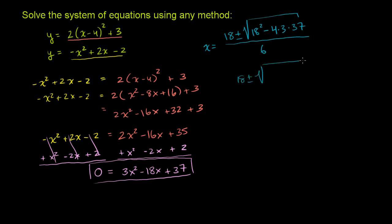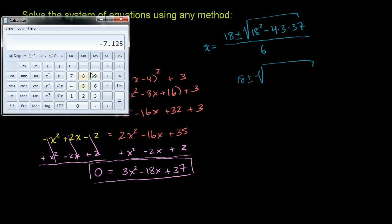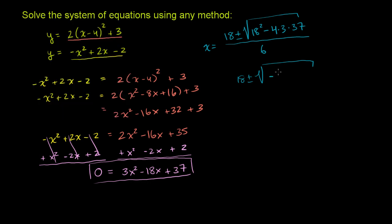Now let's think about what this is going to be. Over here we have, so it's 18 plus or minus the square root of, well let's just use our calculator. I could multiply it out, but I think, so we have 18 squared minus 4 times 3 times 37. Negative 120.